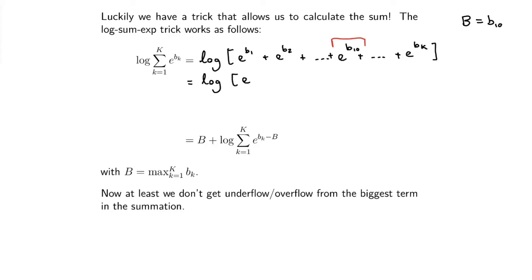What I'm going to do is I'm going to write this as e to the power b_1 minus B times e to the power B. Can you see that this and that is exactly the same? I'm going to do that with the second term as well: b_2 minus B times e to the power B. Can you see that this and this is exactly the same? Plus... this is just e to the power B because that's the maximum one. So that and that is the same. Plus e to b_k minus B times e to the capital B. Close my brackets.